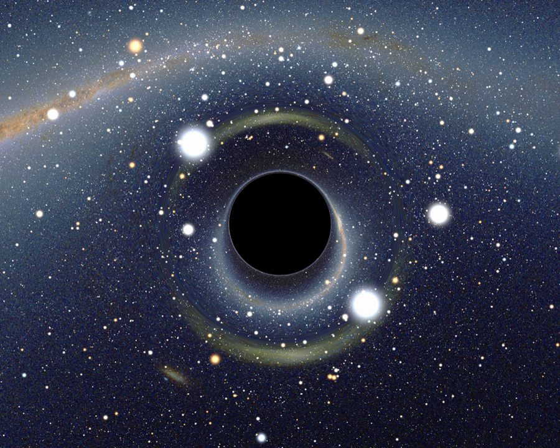Stellar black holes in close binary systems are observable when matter is transferred from a companion star to the black hole. The energy release in the fall toward the compact star is so large that the matter heats up to temperatures of several hundred million degrees and radiates in X-rays.